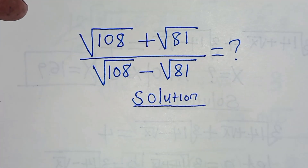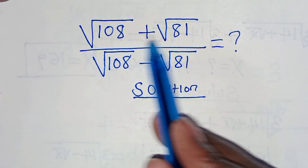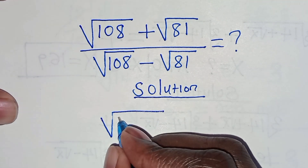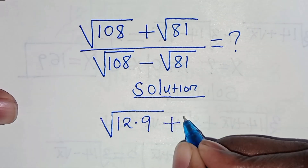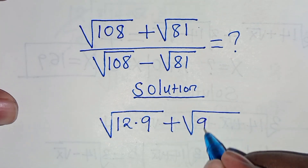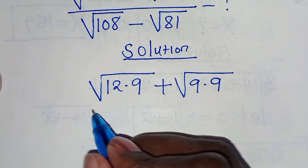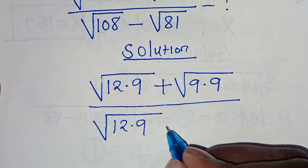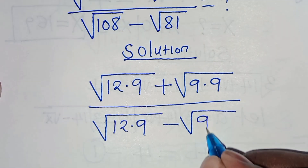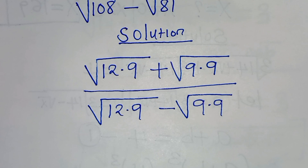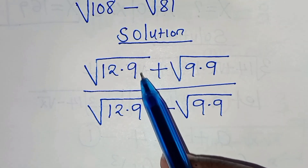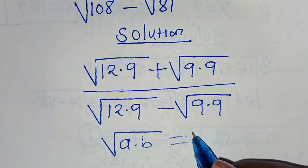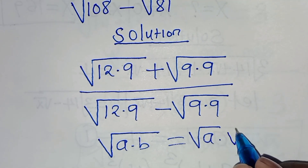The first step: we can express the square root of 108 in the numerator and the square root of 81. The square root of 108 is the same thing as square root of 12 multiplied by 9, then plus the square root of 81 as 9 times 9, divided by square root of 12 times 9, subtract square root of 81, which is 9 times 9. As you can see, square root of 12 times 9 is in the form of square root of a times b, which we can express as the individual square root of a times square root of b.